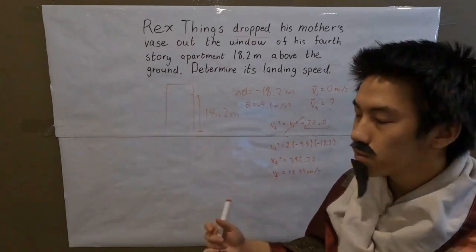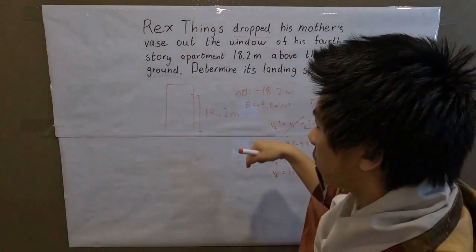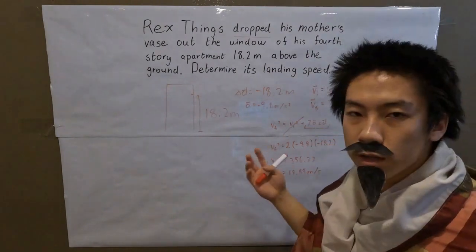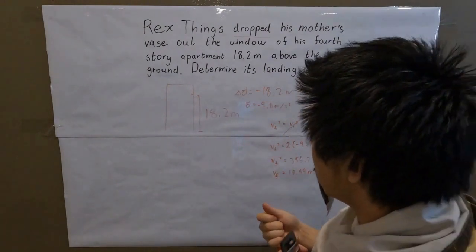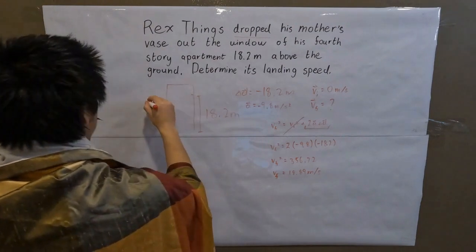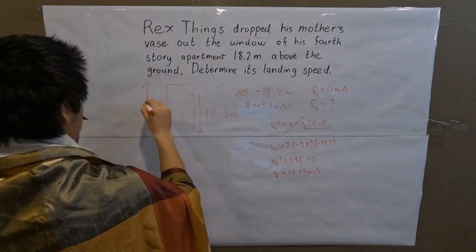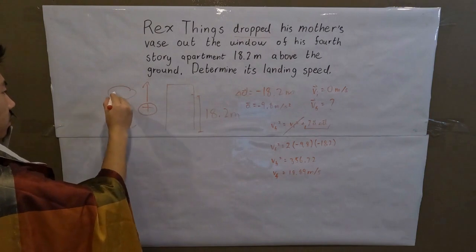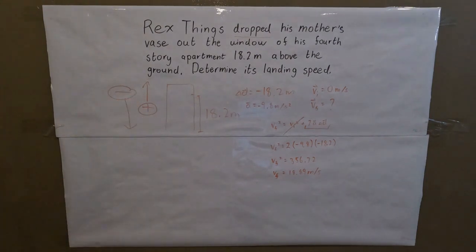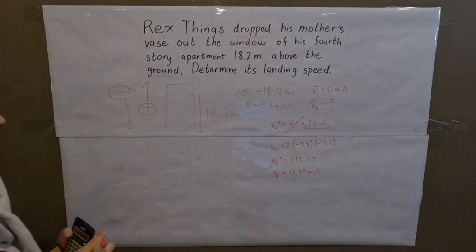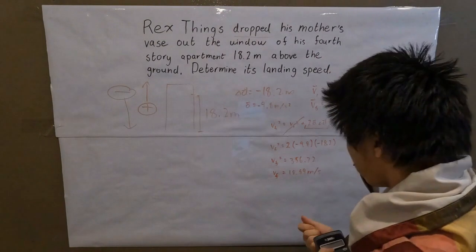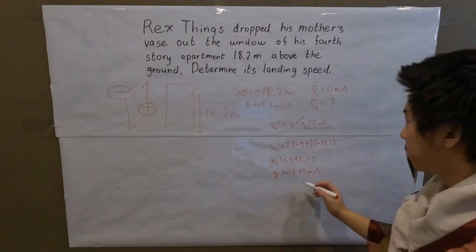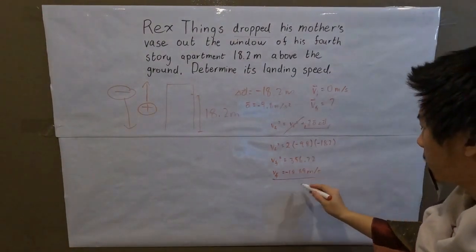Why is it negative? Because the object was falling down. The convention is: up is positive and down is negative. Which is why the final velocity is negative 18.89 meters per second — and that is the answer.